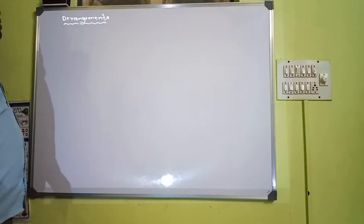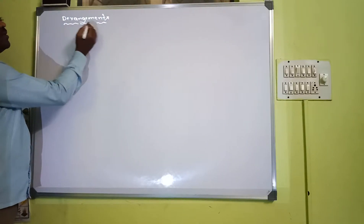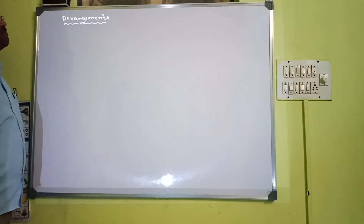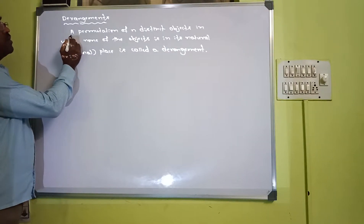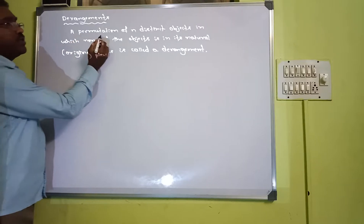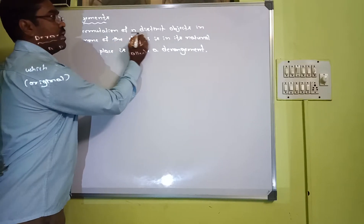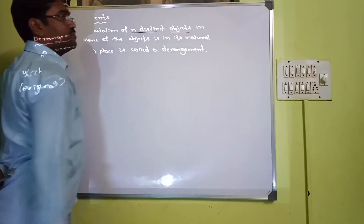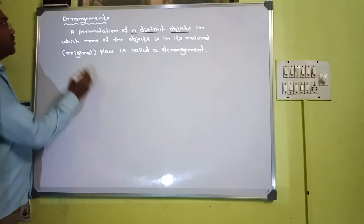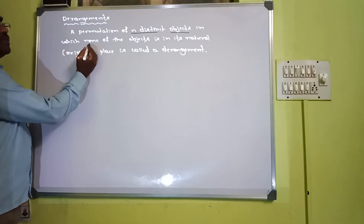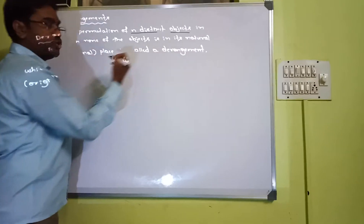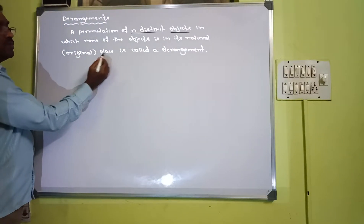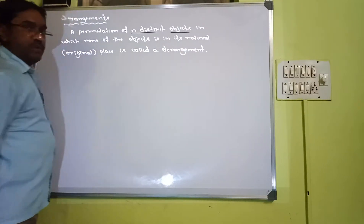Now let us see the next topic: derangements. Let us see the definition. A permutation of n distinct objects in which none of the objects is in its natural place is called a derangement.